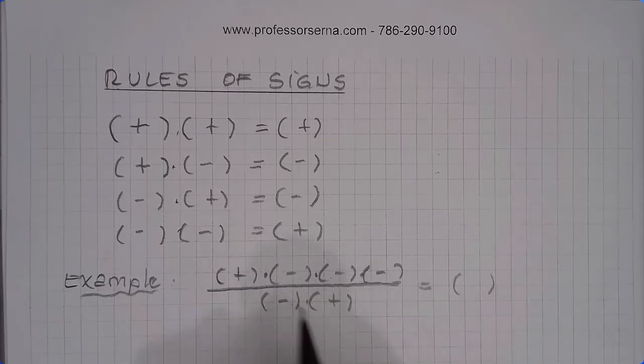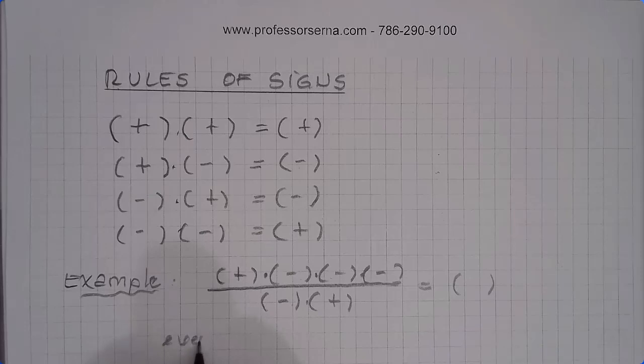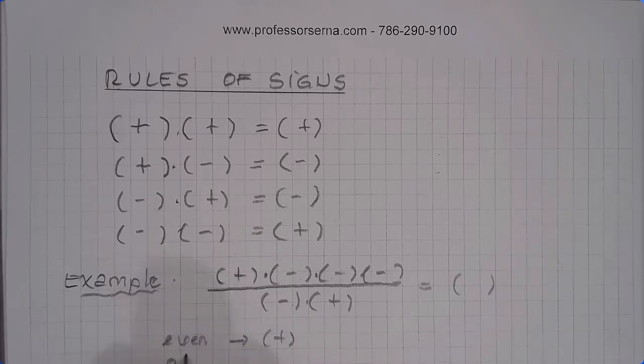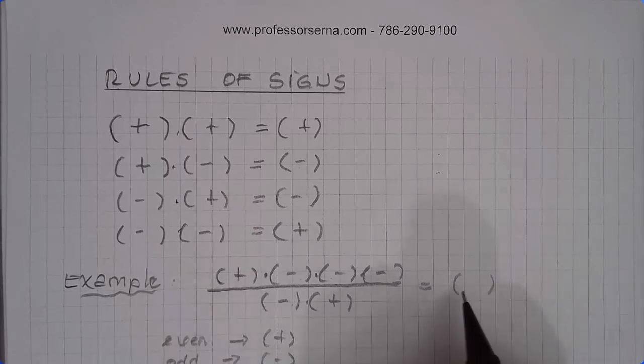One, two, three, four. If the number of negatives is even, then the result is going to be positive. And if the number of negatives is odd, then the result is going to be negative. So this is going to be positive.